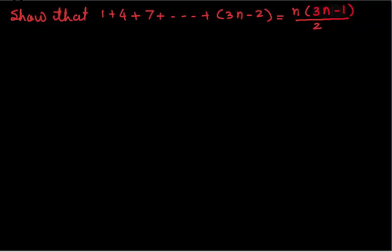Hi, I am Anita. Today I am going to teach you a question on mathematical induction. The question is: show that 1 + 4 + 7 + ... + (3n - 2) equals n times (3n - 1) over 2.